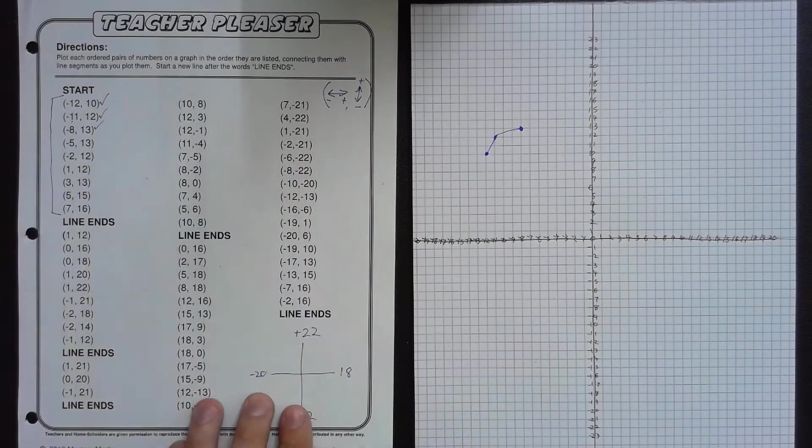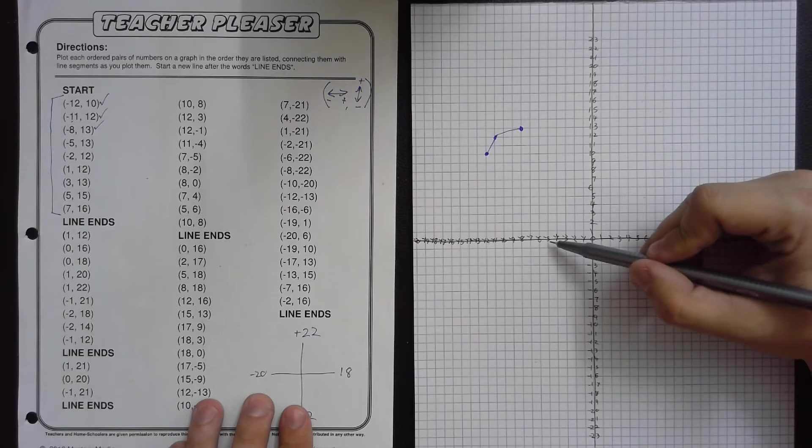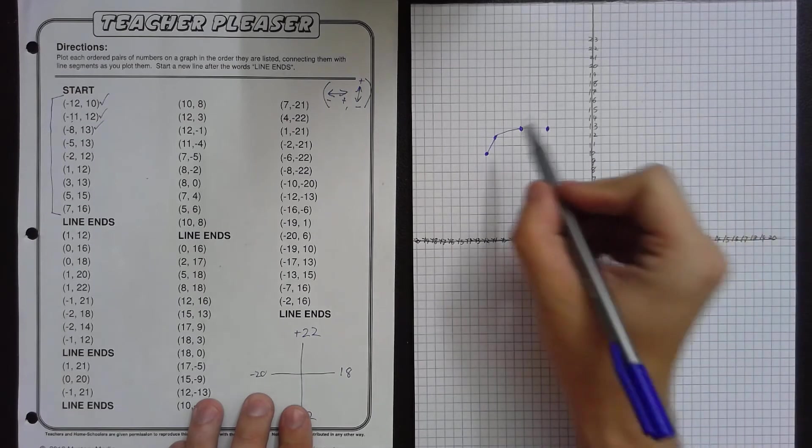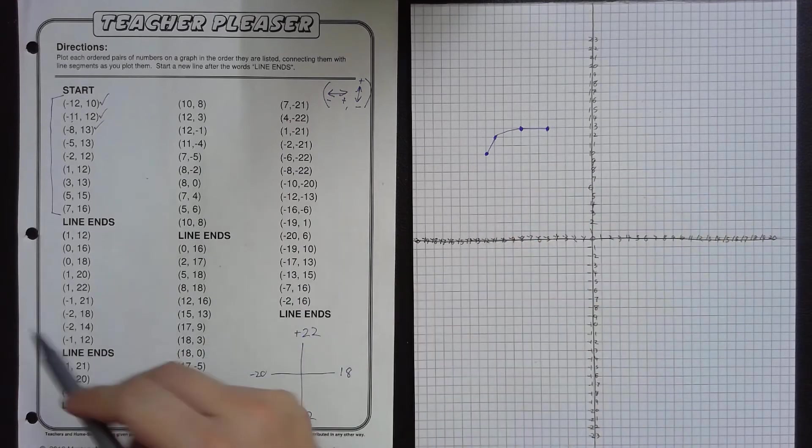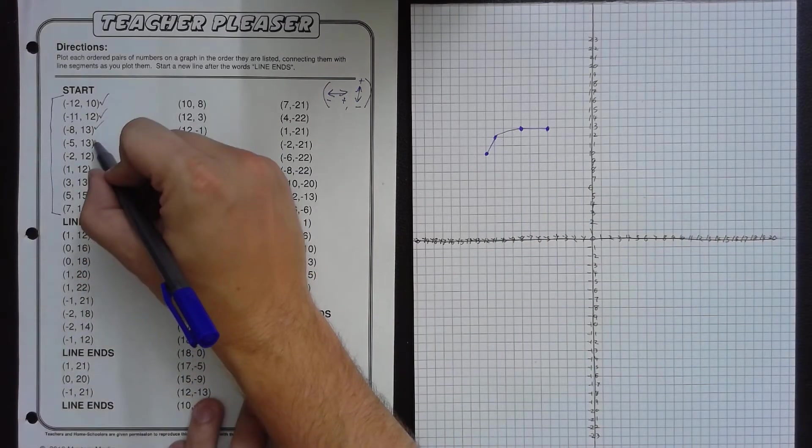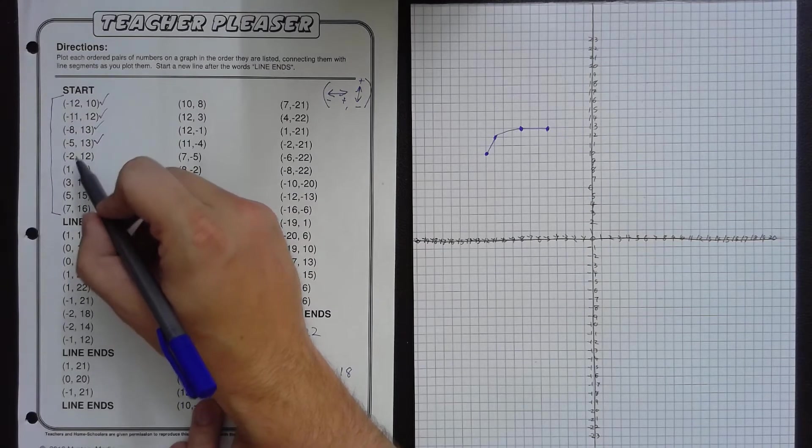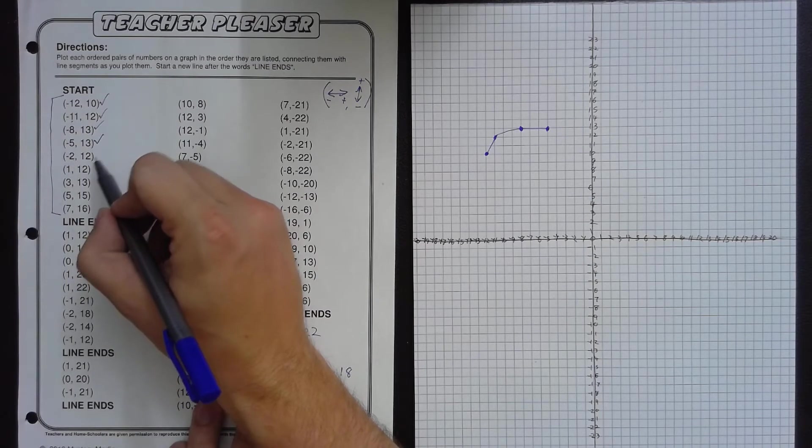And then checkmark. Negative 5, positive 13. So we go 5 to the left, and 13 up. Right here. Then we go, forgot to put a checkmark. Negative 2, positive 12. So I will go 2 to the left, and 12 up.